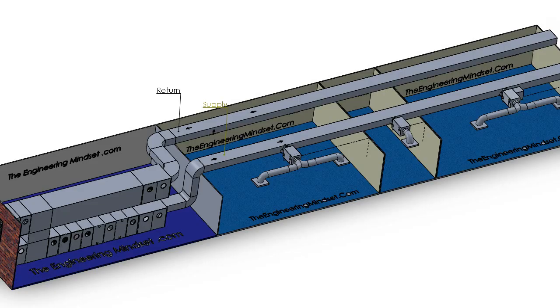VAV systems are very common in offices. This is because they are much more energy efficient compared to the CAV model, which is a constant air volume. And they also allow zoning within the building.